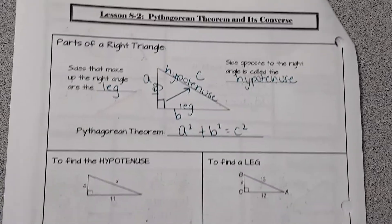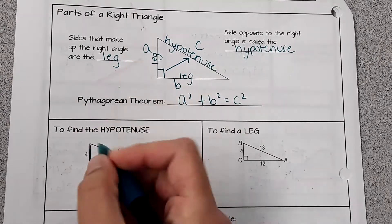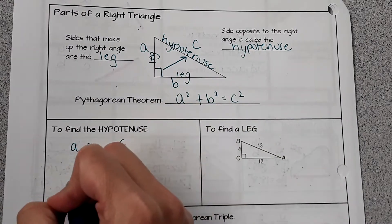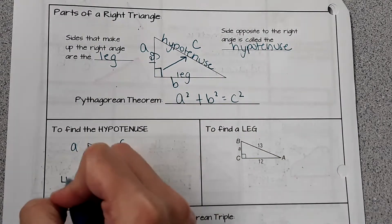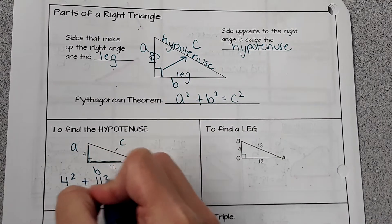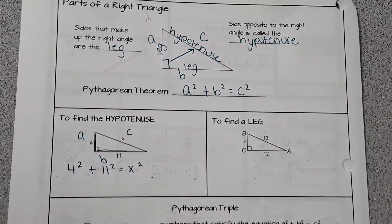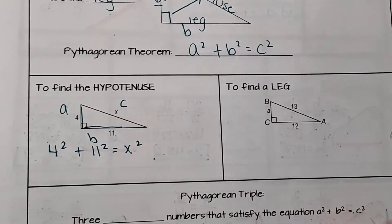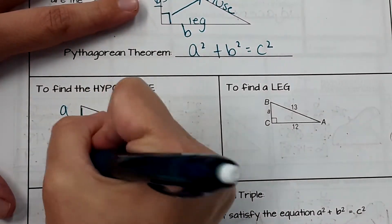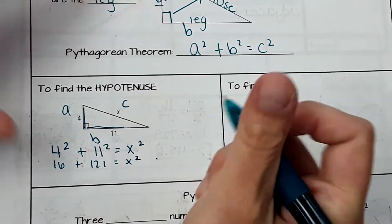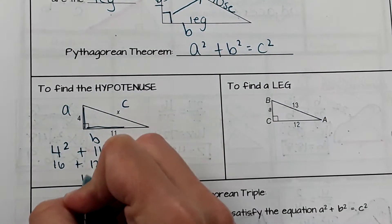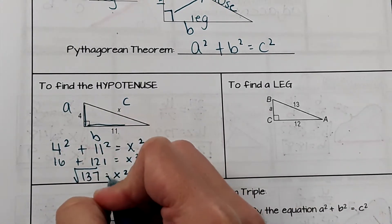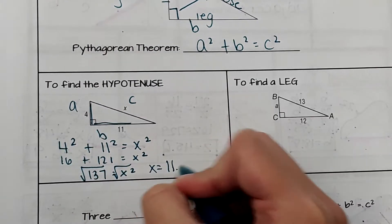To find the hypotenuse, the two legs here are your a and b, and then this here is the hypotenuse. So when you set up Pythagorean Theorem: 4 squared plus 11 squared equals x squared. And then you can solve for x, the hypotenuse. The Pythagorean Theorem only works for right triangles. So 16 plus 121 equals x squared. Then take the square root of both sides, so you get x equals 11.7.